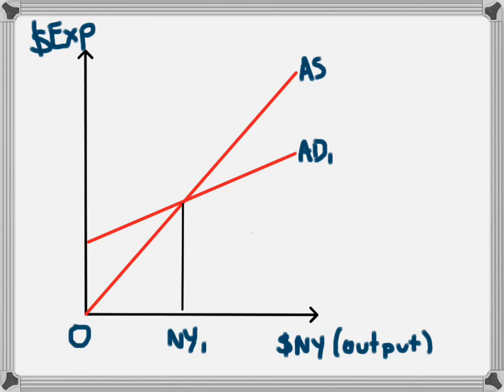This increase would be unrelated to income levels. It would be a flat increase. At each level of national income, the amount of expenditure would be the same, leading to a parallel line. And the aggregate demand level would increase from AD1 to AD2.